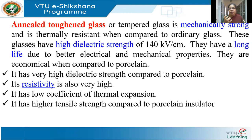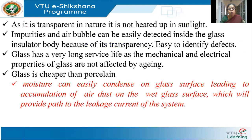Otherwise, toughened glass has many advantages — a very high dielectric strength more than double that of porcelain, high resistivity, low coefficient of thermal expansion, and higher tensile strength compared to porcelain. It is transparent — toughened glass doesn't get heated up in sunlight, and you can detect any flaws such as air bubbles inside. In porcelain, it is very difficult to know if the material is flawed. Defects are easily identifiable with glass insulators, and they have a long service life.